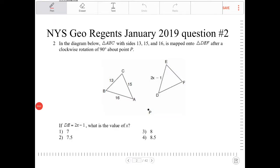In the diagram below, triangle ABC with sides 13, 15, and 16 is mapped onto triangle DEF after a clockwise rotation of 90 degrees about point P. If DE is equal to 2x minus 1, what is the value of x?